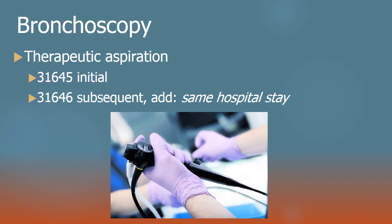The change is clarifying what 'subsequent' means in 31646 — we add 'same hospital stay.' This is convenient so none of us scratch our heads wondering whether a patient who had an initial five years ago and went in and out of the hospital should get another initial or whether every one is subsequent. It's just the same hospital stay, as one would expect. Keeping track of how many bronchoscopies a patient has had in a six-month ICU stay — that's the tricky part.